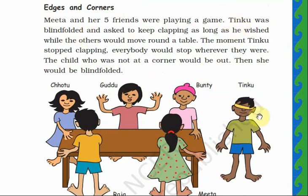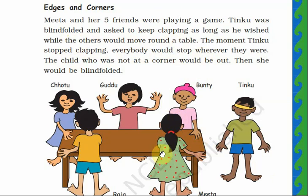Tingu was blindfolded and asked to keep clapping as long as he wished. You can see a ribbon folded around his eyes — he cannot see anything and he is clapping his hands. While he claps, the others would move round the table. This is similar to musical chair: when music starts, you move round the chairs, and when the music stops, the one who doesn't get a chair is out.